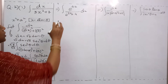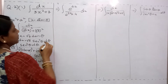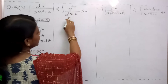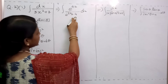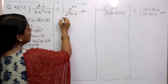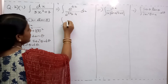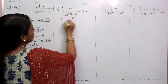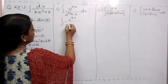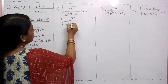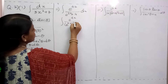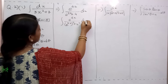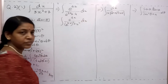Now come to the second part. That is integration of e^(4x) / (e^(8x) + 4) dx. Can I write it in the same format? e^(4x) divided by (e^(4x))² + 2² dx.